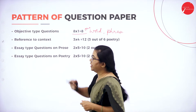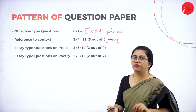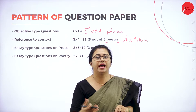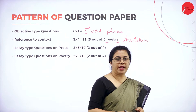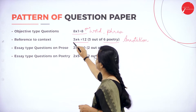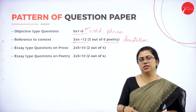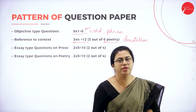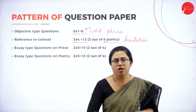Then we have reference to context, which means it will be from poetry only — also called annotation. They will give you a few lines from a poem and ask you to annotate it. You will have to write which poem it is from, who is the poet, and in what context it is written. You have to answer any 3 out of 6. You have 8 poems, but you have to read all 8 — you cannot decide in advance which 6 to read, since you don't know which poem will appear. So read all 8 and then answer any 3.